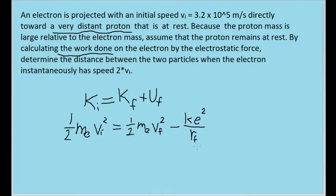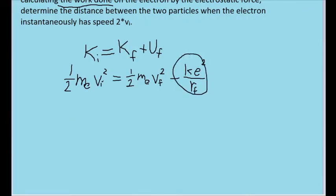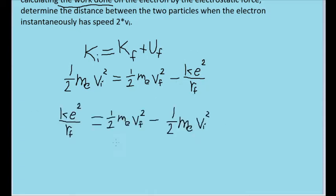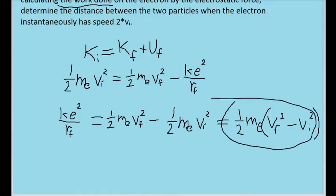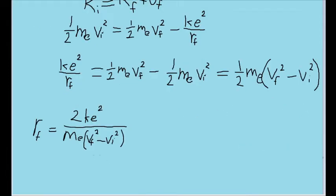r final represents the final distance between the proton and the electron after they've moved for some time. This is the variable we want to solve for. To solve for it, let's first isolate this term on its own by adding it to both sides of this equation. We can also simplify this algebraically by factoring out the one-half times m sub e, since that's included in both terms. Then, to solve for r final, let's multiply both sides by r final and then divide both sides by all of this on the right.